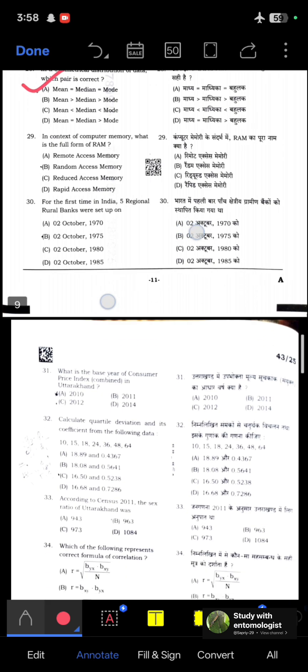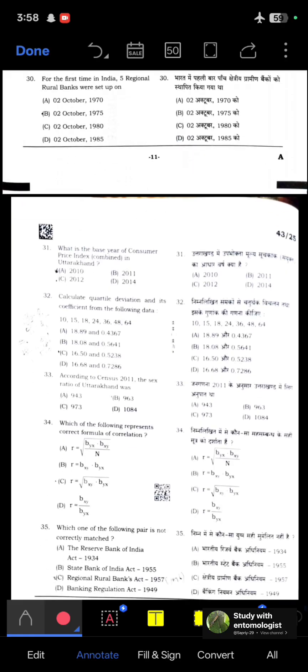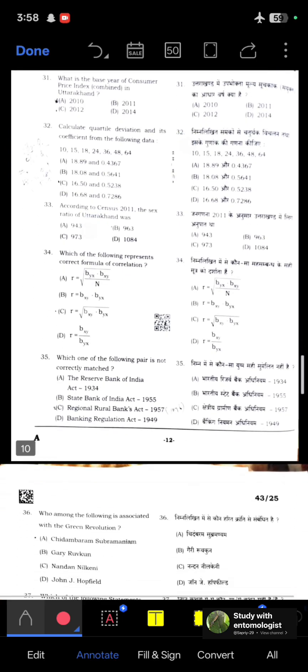In context of computer memory, what is the full form of RAM? Random Access Memory. For the first time in India, five regional rural banks were set up on October 2, 1975. What is the base year of Consumer Price Index Combined in Uttarakhand? Base year is 2012.